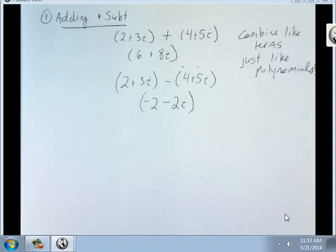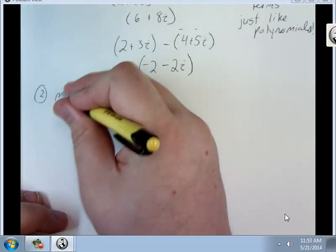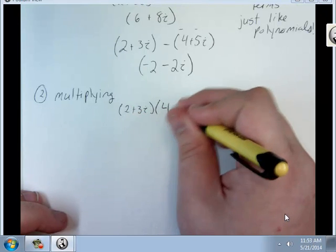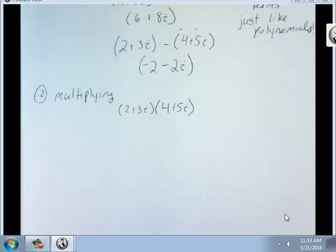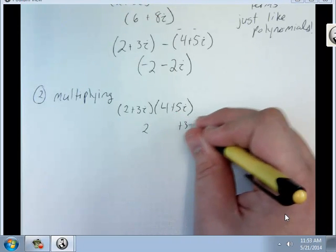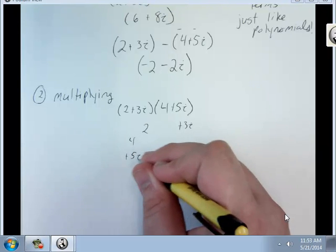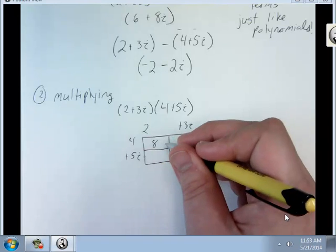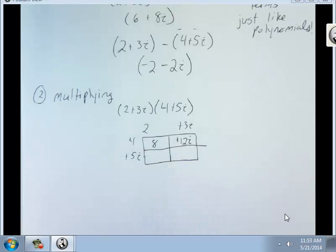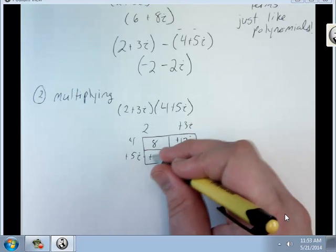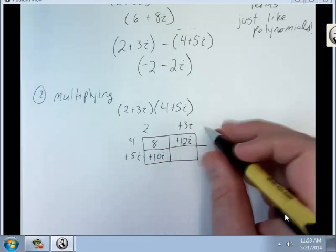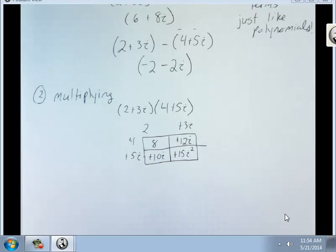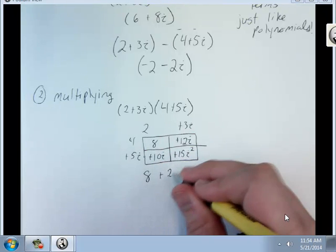The trick comes with multiplying. 2 plus 3i times 4 plus 5i. Multiply just like we normally would. We've got 2 plus 3i and we have 4 plus 5i. Here's my box. 4 and 2 is 8. 4 times 3i is plus 12i. 2 times 5i is plus 10i. Now, 3i times 5i is plus 15i squared. And we'll get to that in a second. So we have 8 plus 22i plus 15i squared.